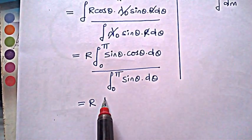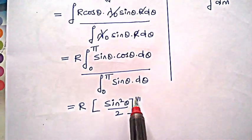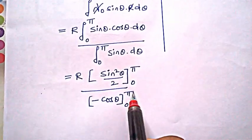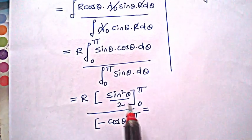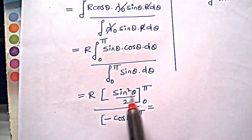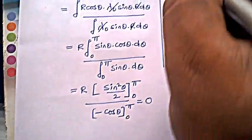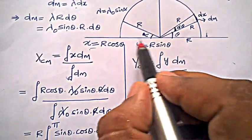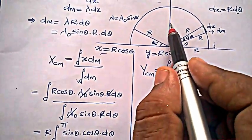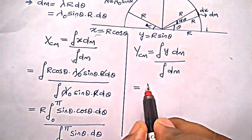The numerator integral: ∫sinθ cosθ dθ = sin²θ/2, evaluated from 0 to π, gives sin²(π)/2 − sin²(0)/2 = 0. So the entire numerator becomes 0, meaning the x-coordinate of the center of mass is 0 — the center of mass lies on the y-axis only.